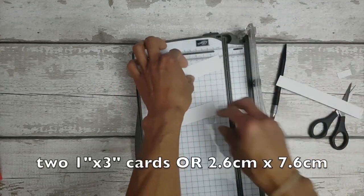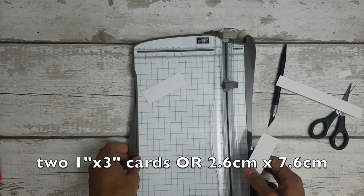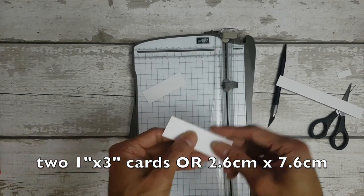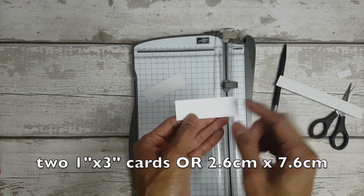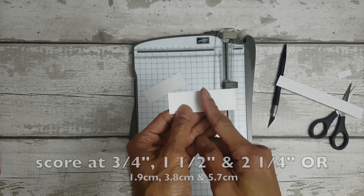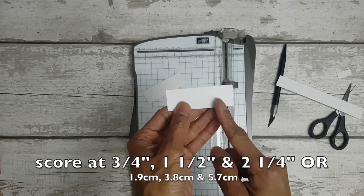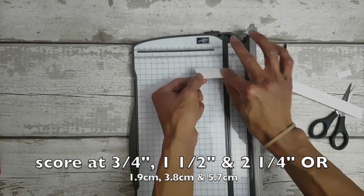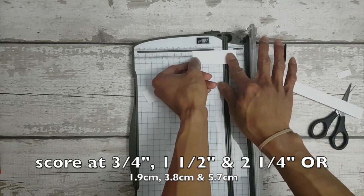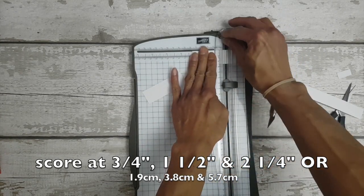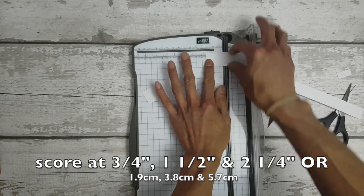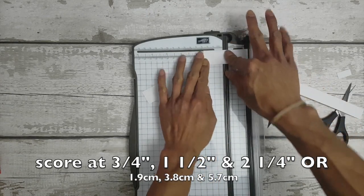So again for the rubber band holders you'll need two one by three inch cards or two point six by seven point six centimeters. You'll be scoring at three quarters, one and a half, and two and a quarter inch or at one point nine, three point eight, and five point seven centimeters.